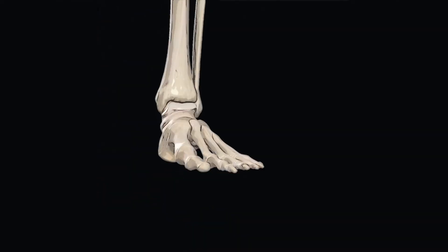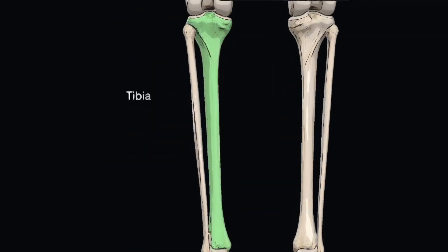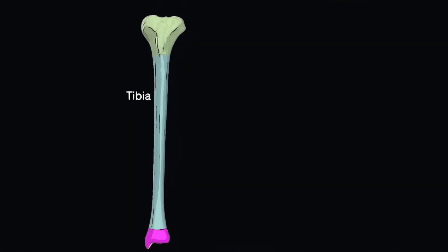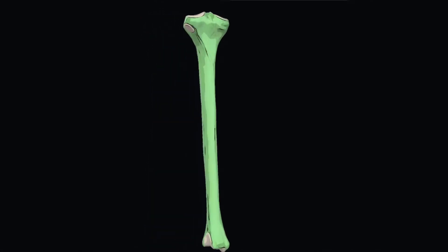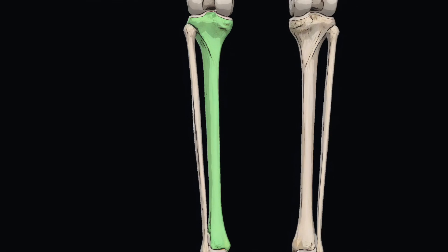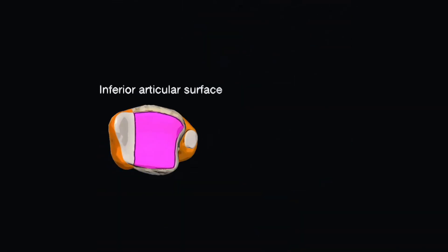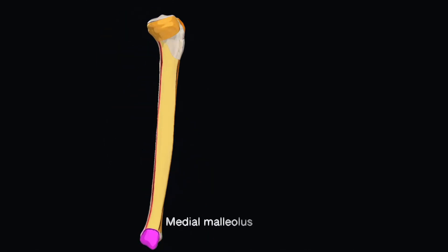First we will review the osseous structures, beginning with the tibia. The tibia, or shin bone, is the largest of the two bones in the lower leg. It is subcutaneous throughout its length and can be easily palpated. The proximal and distal ends of the tibia are known as the superior and inferior articular surfaces. The inferior articular surface is located on the distal end where it articulates with the talus. It is concave anterior-posteriorly and broad anteriorly.